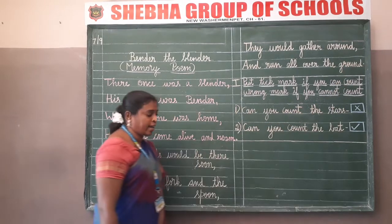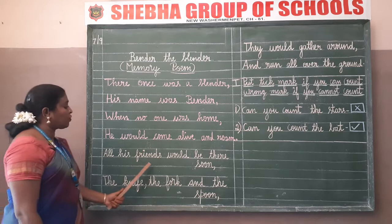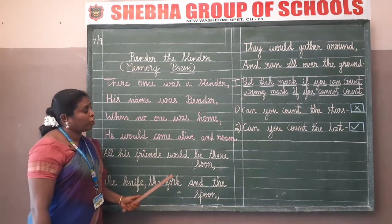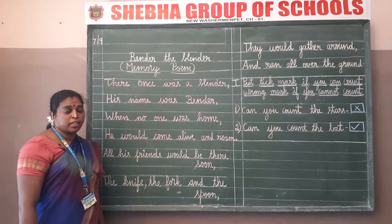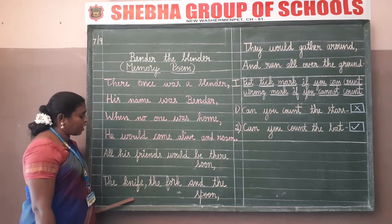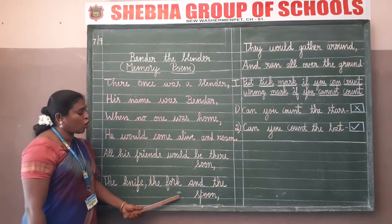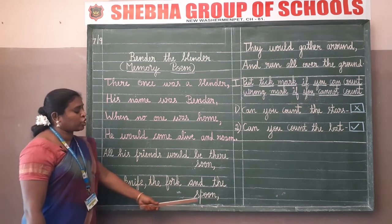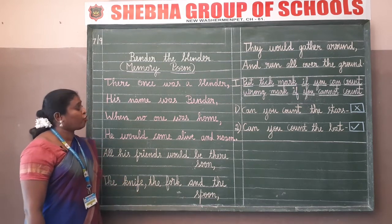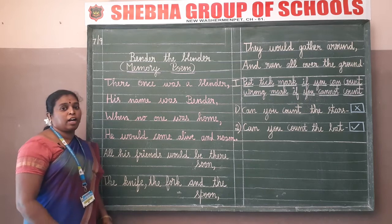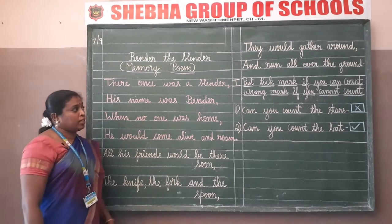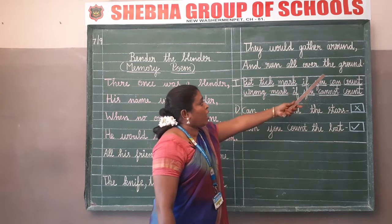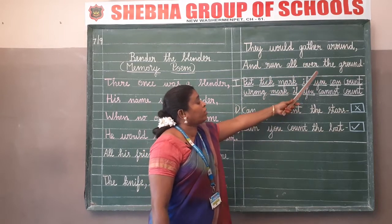The meaning of this stanza: 'All his friends would be there soon.' Who are Blender's friends? The knife, the fork and the spoon - they would gather around and run all over the ground.